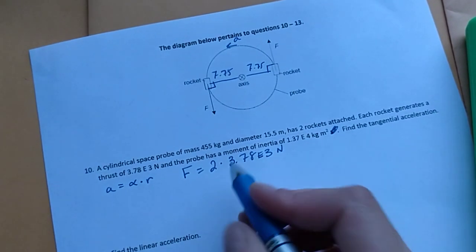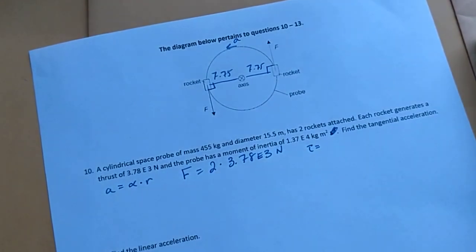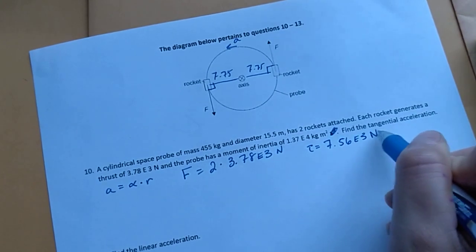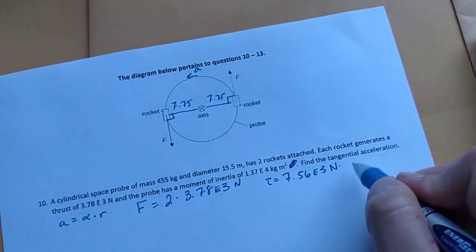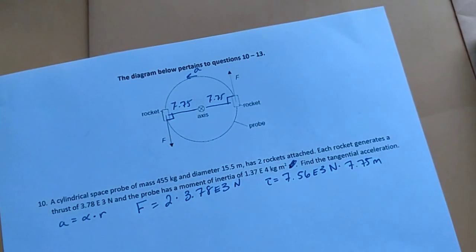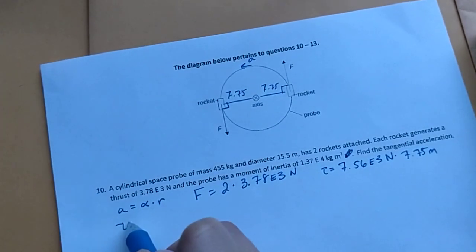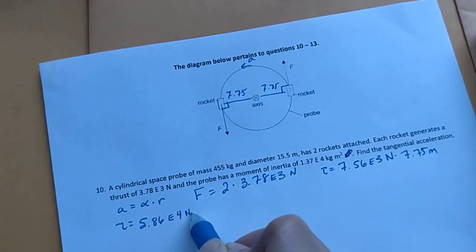So torque equals the forces two times 3.78 E3. So that's 7.56 E3 newtons times the distance. These are from the axis of rotation, 7.75 meters. So I'll do this in my calculator. Here times 7.75 meters. And I get a torque of 5.86 E4 newton meters.